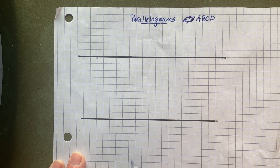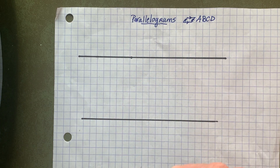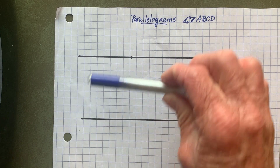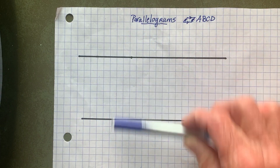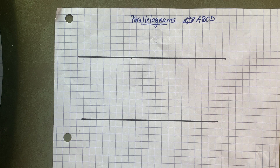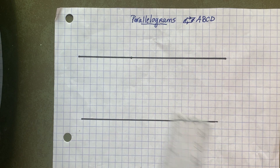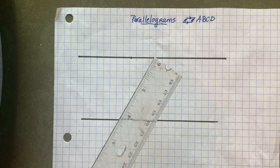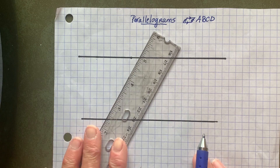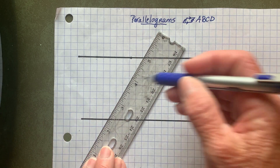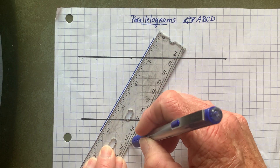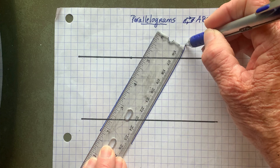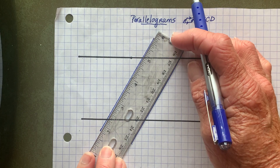So I'm going to create that here. On my graph paper, we know that two horizontal segments run parallel to one another — that's how the graph paper is designed. And we also know that the opposite sides of a ruler run parallel. So I'm going to create a parallelogram using those facts.